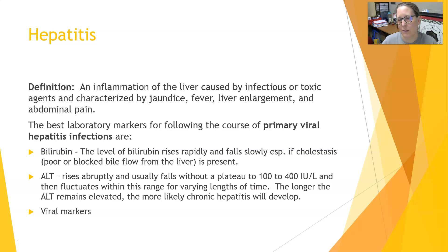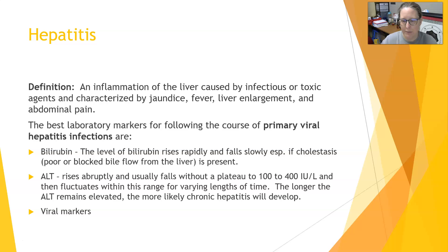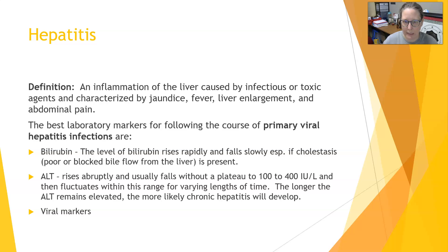For toxic hepatitis you can have things like alcoholic hepatitis or hepatitis caused by certain drugs or toxins. The best lab markers for following the course of primary viral hepatitis infections are bilirubin, which rises rapidly and then falls slowly, especially if cholestasis — meaning poor or blocked bile flow from the liver — is present. ALT rises abruptly, usually to 100 to 400 international units per liter, and of all the liver enzymes ALT is the most liver-specific and most helpful.